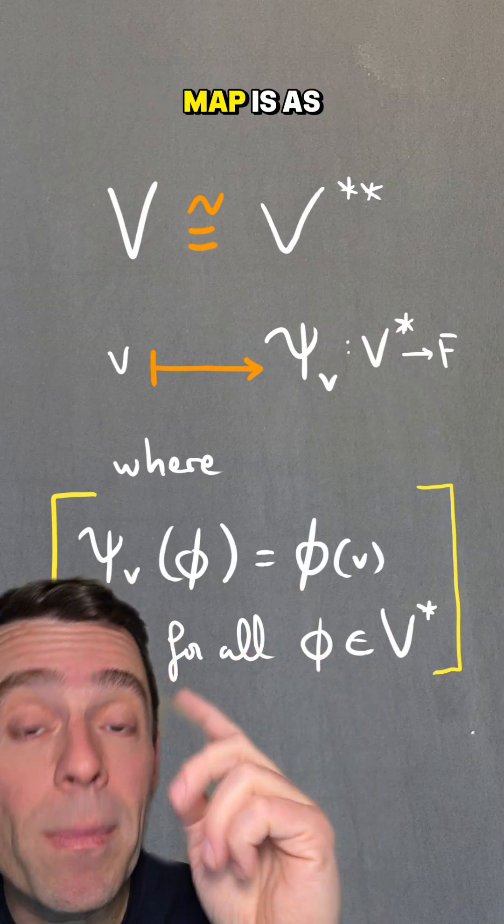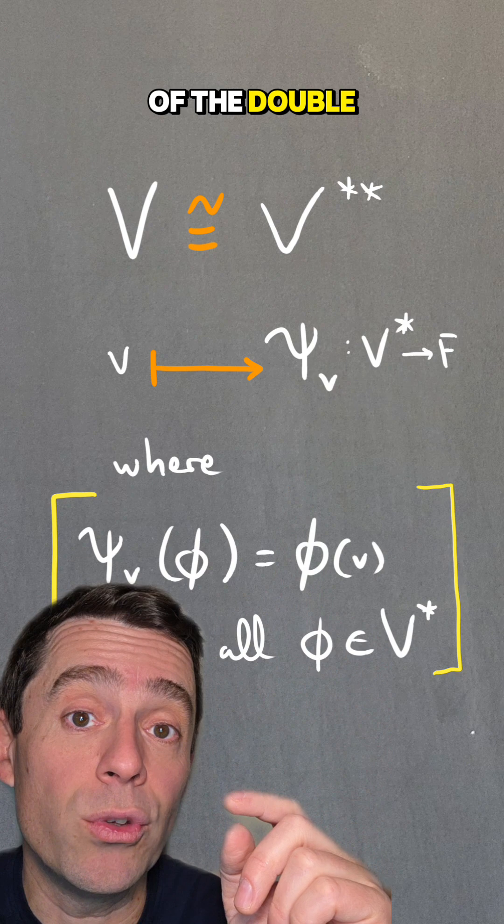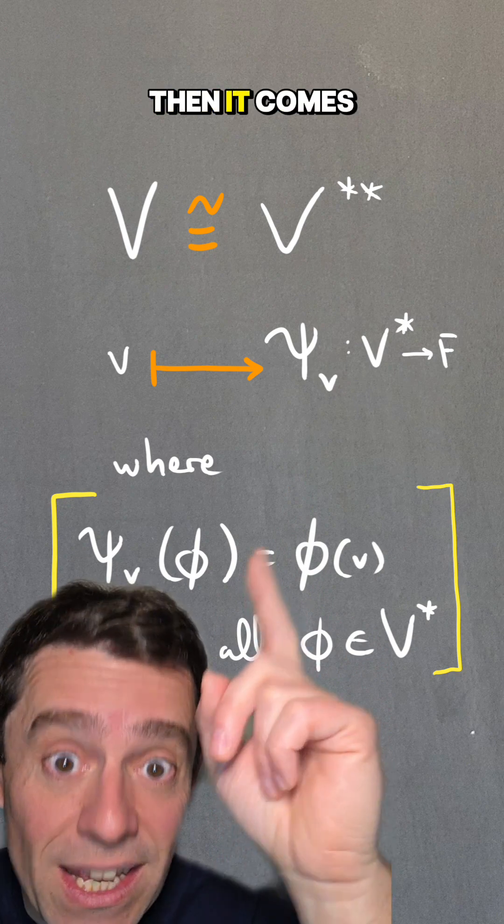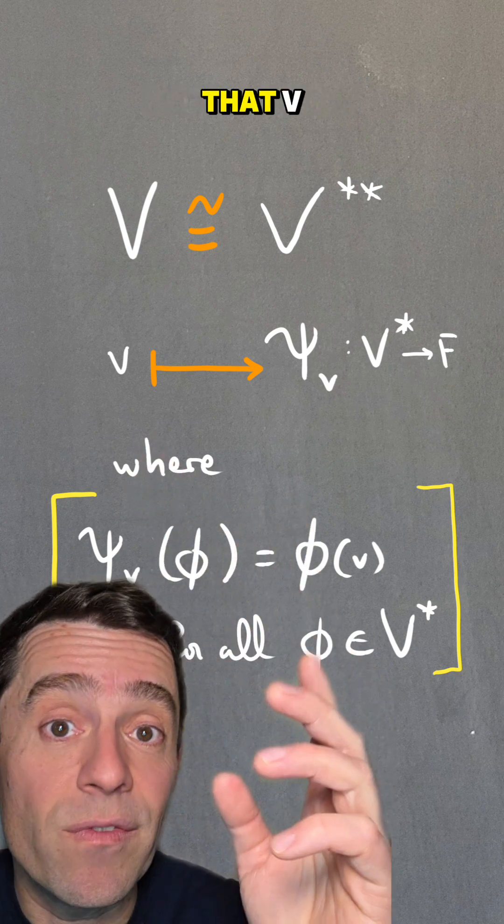So the inverse map is as follows. Take any element of the double dual, then it comes from one V, so you send it back to that V.